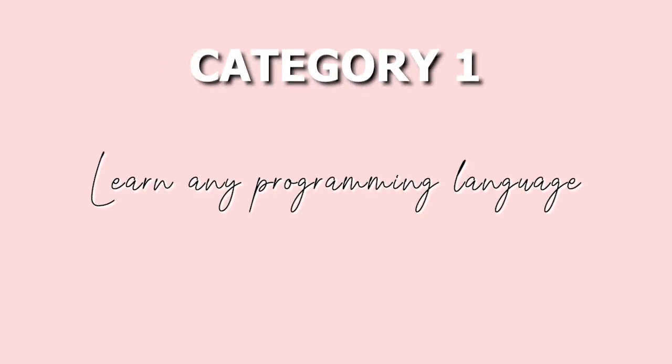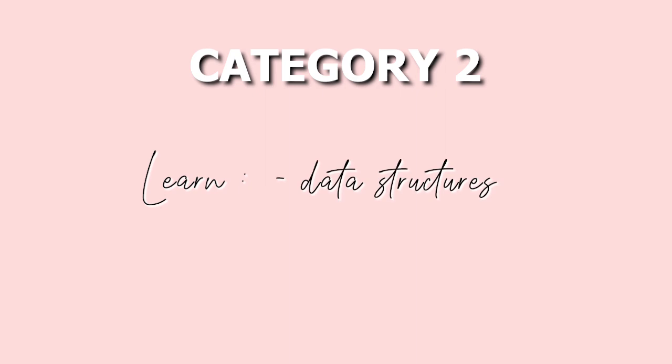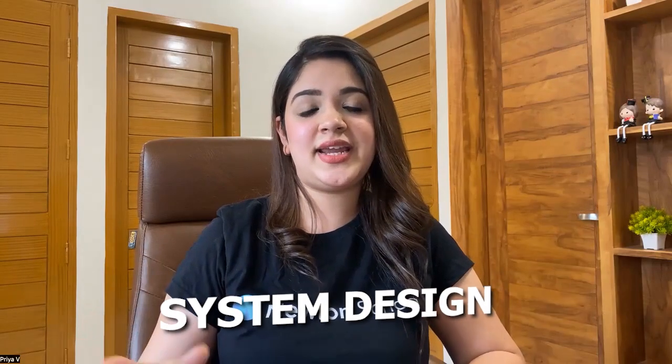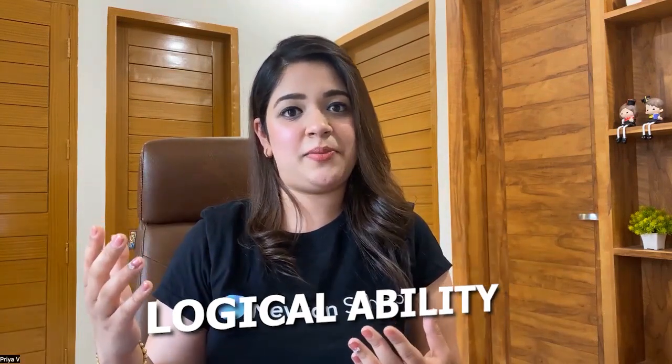I've segregated these books into three or four different sections. First, we'll talk about books for learning particular programming languages. In the second category, we'll discuss books that teach you data structures and algorithms. Then we'll talk about system design, and lastly, one book to master your logical building ability.